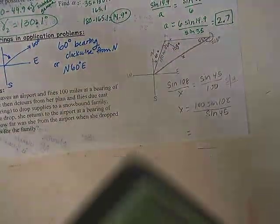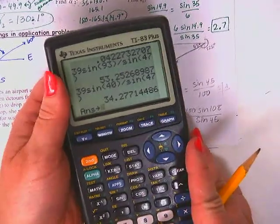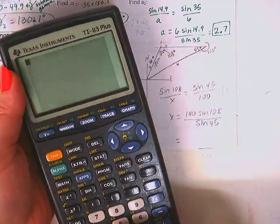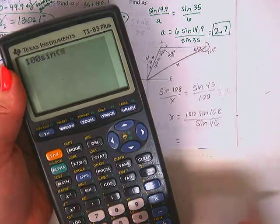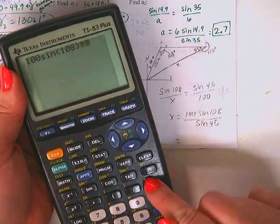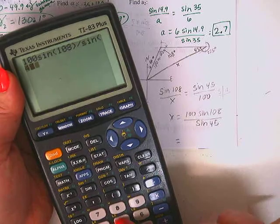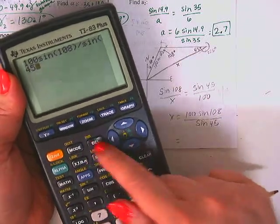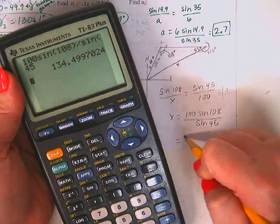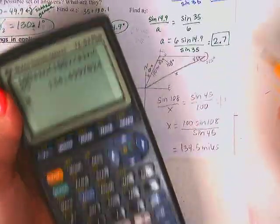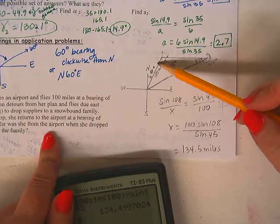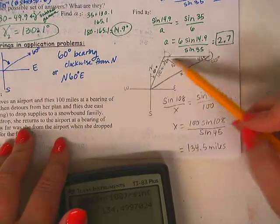So then we find the answer which I don't have written here. Throw it in a calculator. So 100, make sure your calculator is in degree mode, sine of 108 divided by the sine of 45. And I get 134.5 miles.